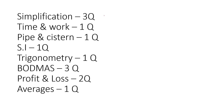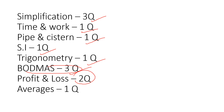For the Maths section: Simplification has 3 questions, Time and Work, Pipes and Systems, Simple Interest, Trigonometry has 1 question, Board Maths has 3 questions, Profit and Loss has 2 questions, and Average. We will explain the Simplification questions clearly.